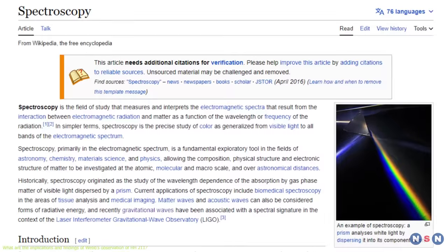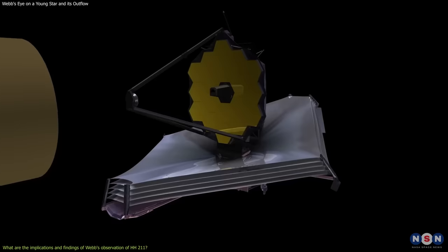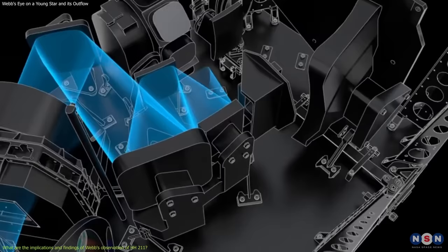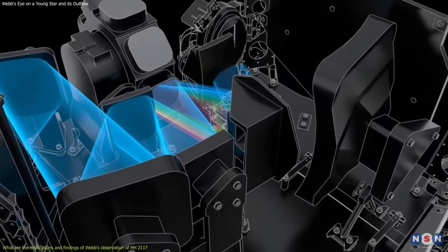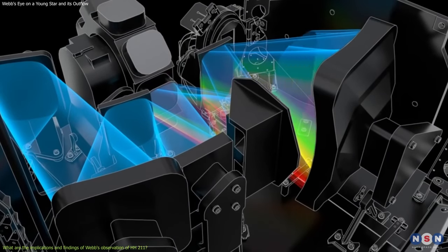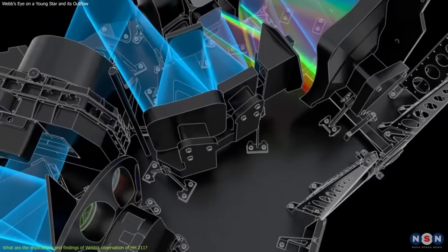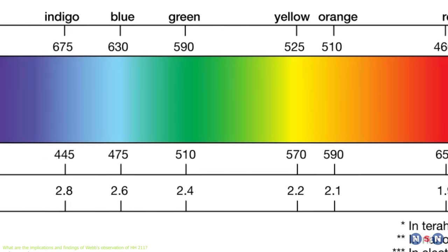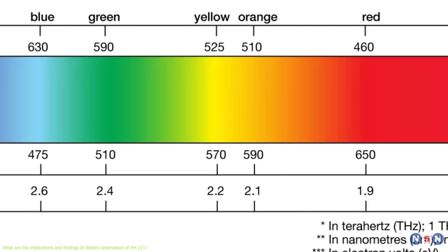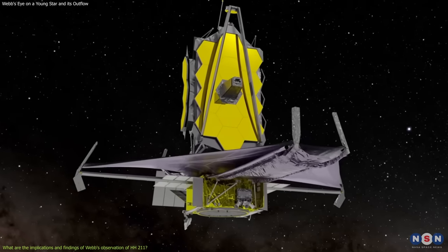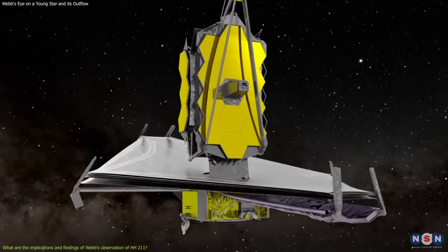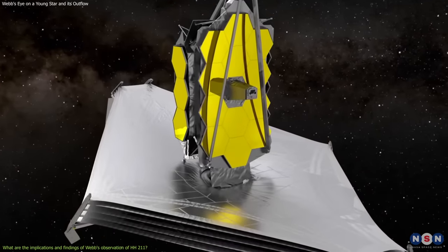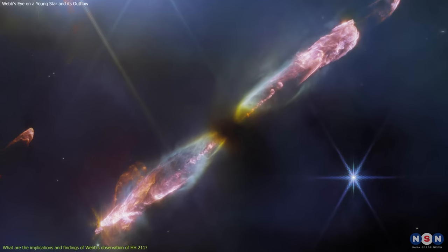Webb also used a technique called spectroscopy to analyze the infrared light from the outflow in more detail. Spectroscopy is the process of splitting light into its component colors, or wavelengths, and measuring how much light there is at each wavelength. This creates a spectrum, which is like a fingerprint of the light source. By comparing the spectrum with known patterns of molecular emission, Webb can identify which molecules are present in the outflow and how they are moving.